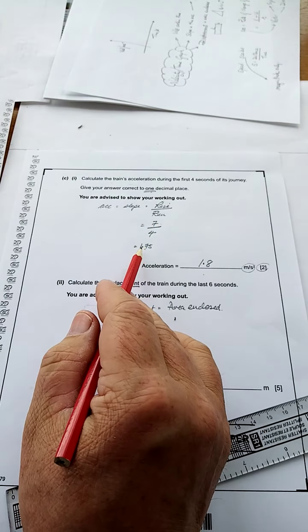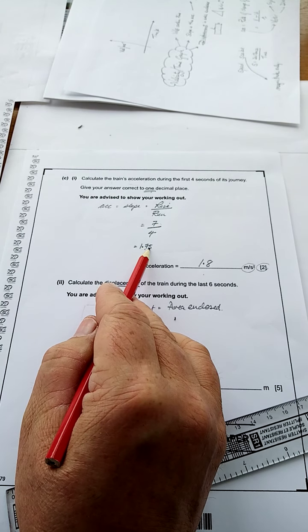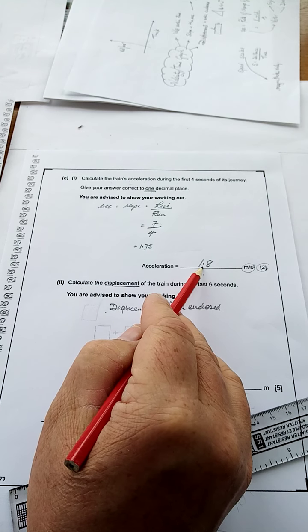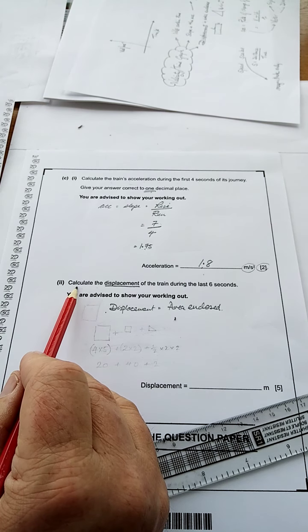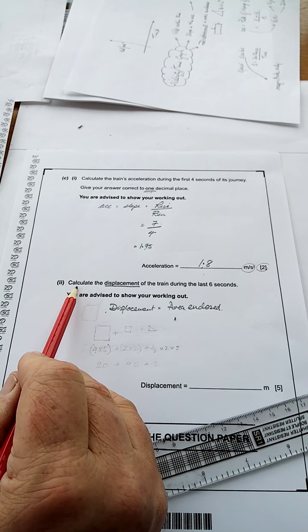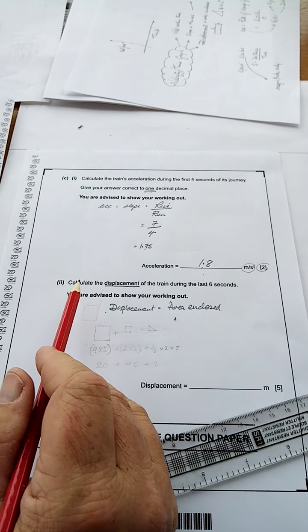No point getting it right and putting the wrong answers in. Seven divided by four is 1.75. To one decimal place, 1.8. Now, watch the wording of the question. Remember, the examiner doesn't want to give you marks for anything.